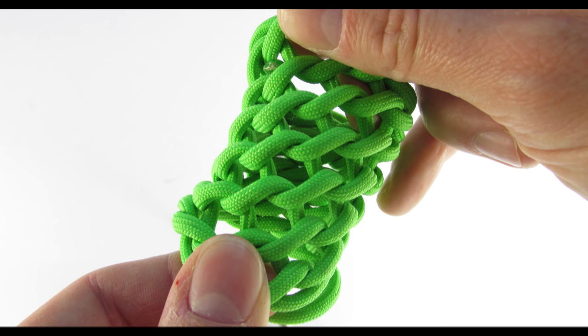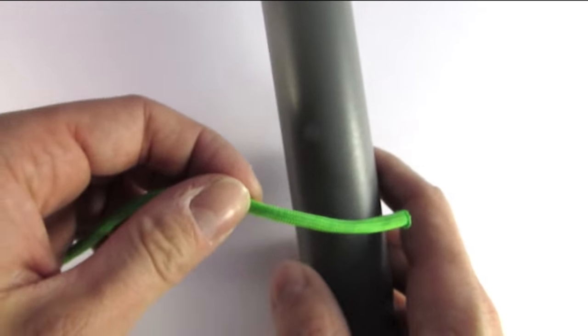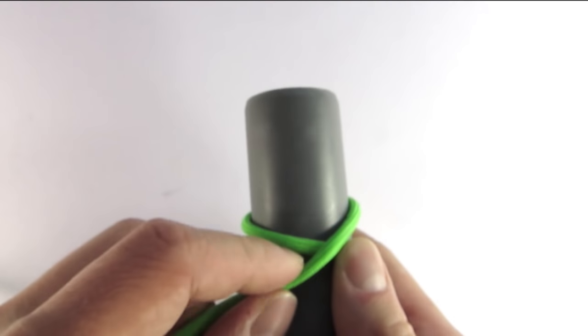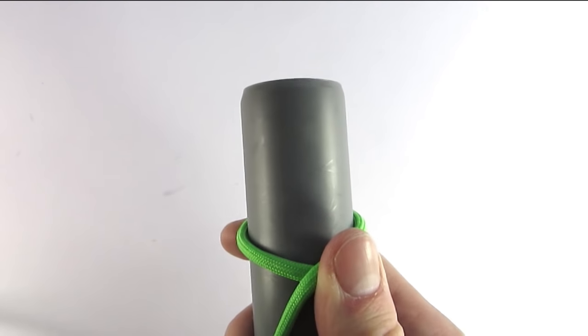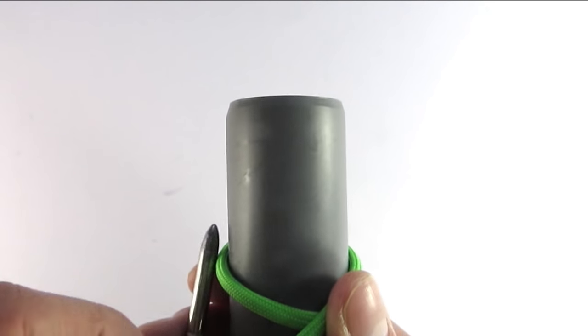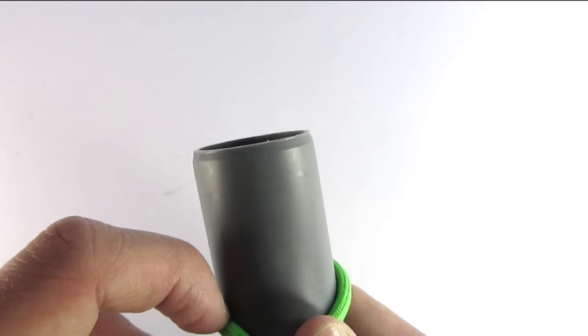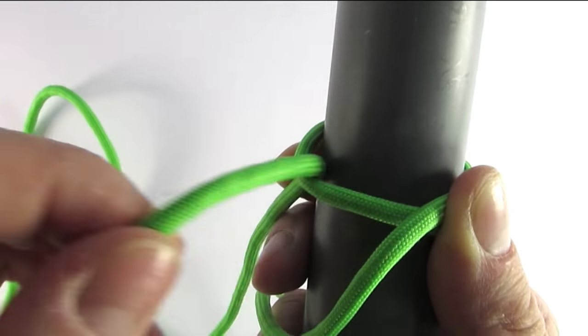First thing we're going to do is get an object that we want to wrap around, some cord onto which I've attached a lacing needle, and we're going to wrap it around one time, basically placing our working end over our standing end.